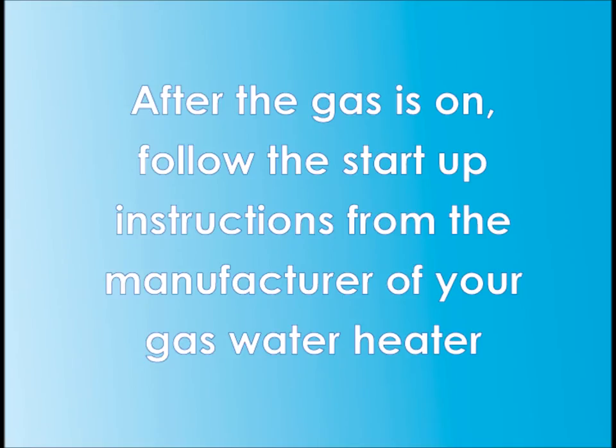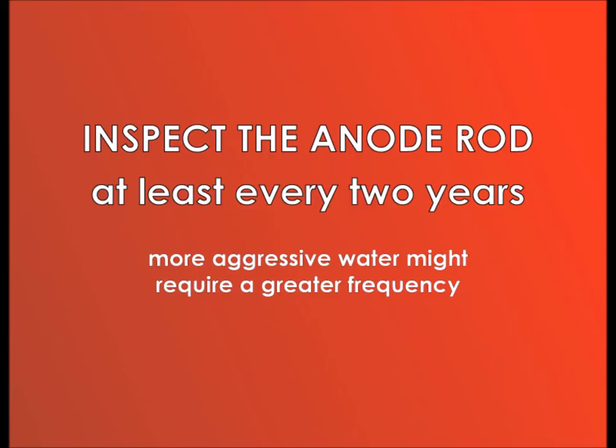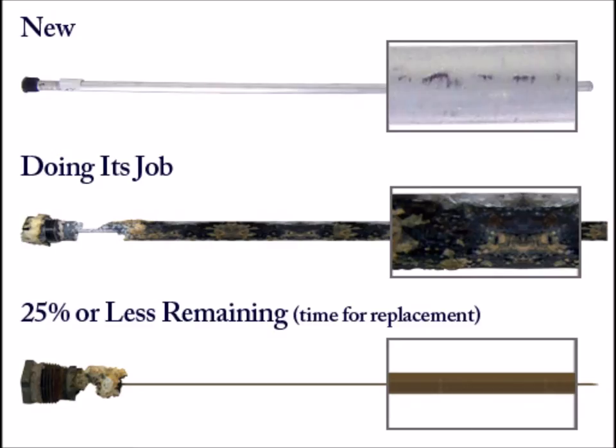Follow the startup instructions from the manufacturer of your gas water heater. Check your anode rod at least every two years. Replace it when 25% or less remains.